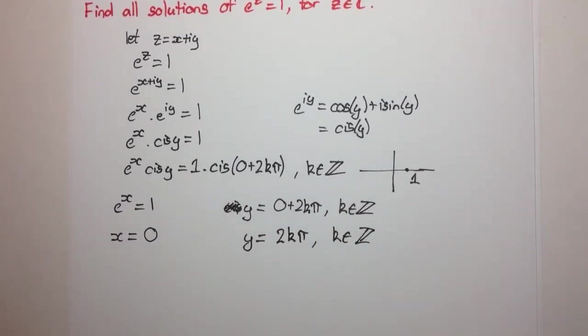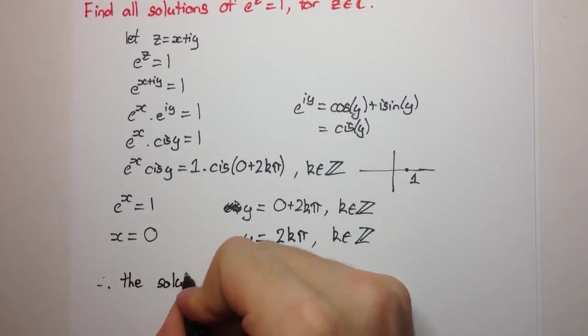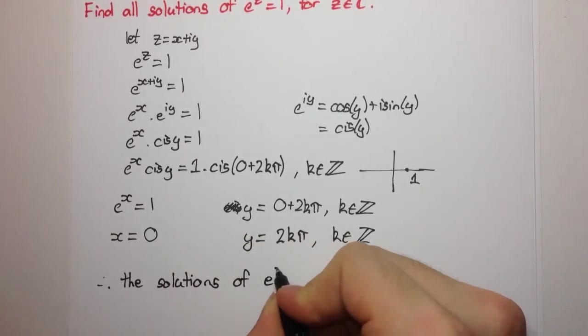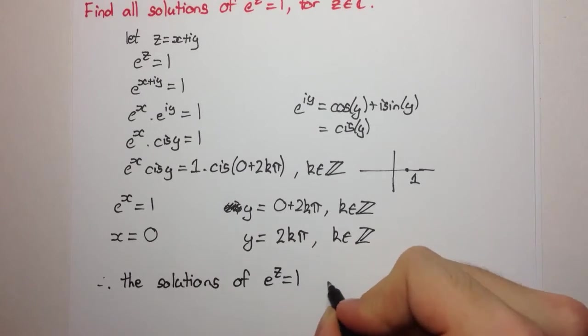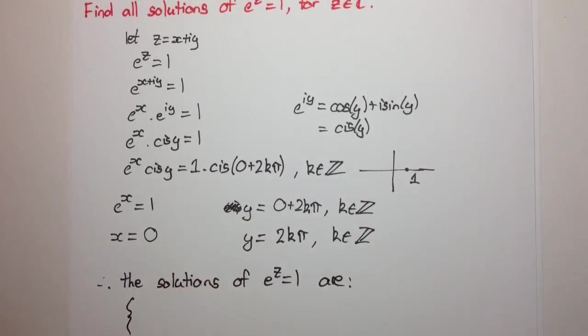And so we can say, therefore, the solutions of e to the z equal to 1 are - now, it's a set, and the set is the set of numbers 2kπi.